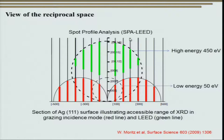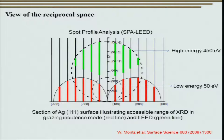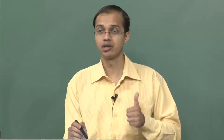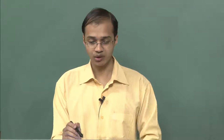There is another technique known as spot profile analysis low energy electron diffraction, or SPA-LEED, which gives us information about the direction exactly perpendicular to the plane. With SPA-LEED we can get a lot of information about the dimensions of features on the surface along the Z axis. We will talk more about it in the next few slides, but let us first try to understand how exactly two-dimensional diffraction works.